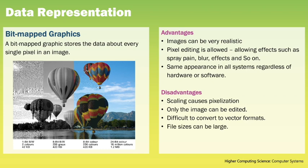A bitmap graphic stores data about every single pixel in an image. This can lead to several advantages — because we are storing the details of individual pixels, they can look extremely realistic and we can edit down to the pixel level. However, because we store the pixels, if we make the image bigger then the image will become pixelated. And because we're storing the details of every single pixel, the file sizes can be quite large.